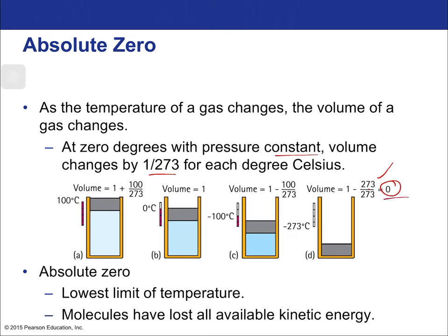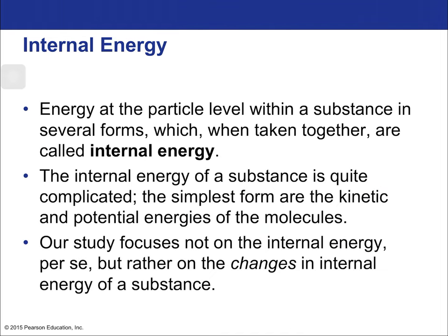Absolute zero is entirely hypothetical — it is a lower limit that doesn't exist as far as we know. Molecules have lost all their available kinetic energy, but electrons have not. There is actually something called the Fermi-Dirac distribution which deals with the idea of electron pressure, but we don't cover it in this class. As far as absolute zero goes, it is the lowest possible hypothetical temperature, at which point molecules take up no space.